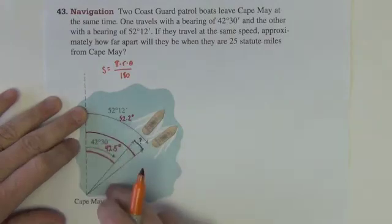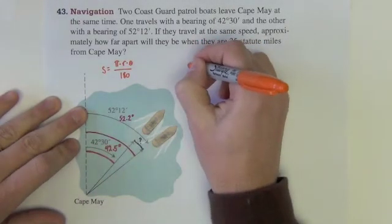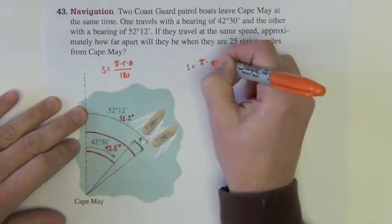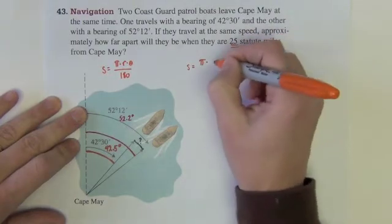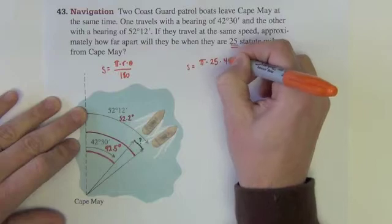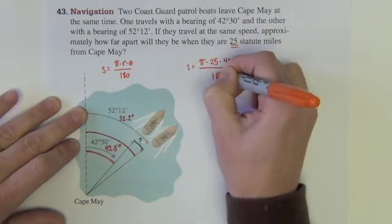Okay, so let's find the arc length for this first one here, this 42.5 degree. So, I'd have S equals pi times the radius. The radius is how far apart they are from where they started, they're 25 miles from where they started. So, that's 25 times the angle, 42.5 divided by 180.